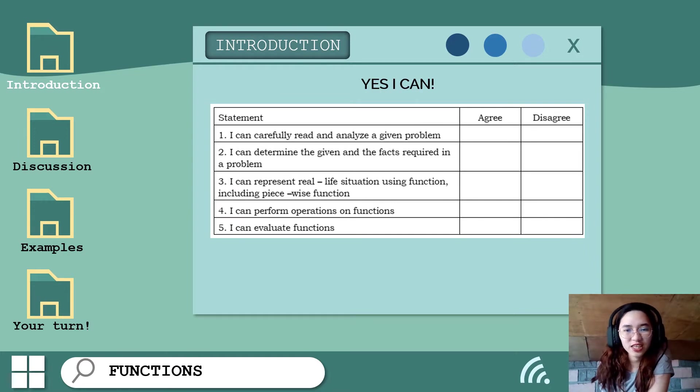Before we proceed to our discussion, let's check if you agree with these statements. First, I can carefully read and analyze the given problem. Second, I can determine the given and the facts required in a problem. Number three, I can represent real-life situation using function including piecewise function. Number four, I can perform operations on function. Number five, I can evaluate functions. If you agree with all these statements, that means you are very much ready for this lesson.